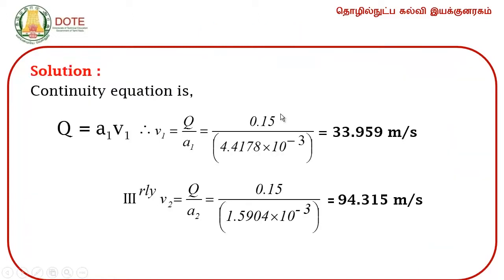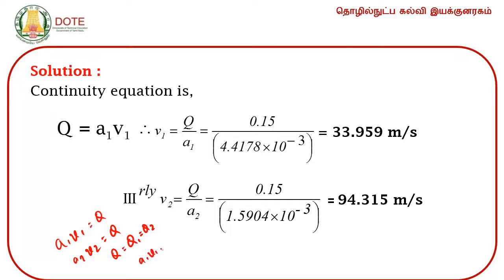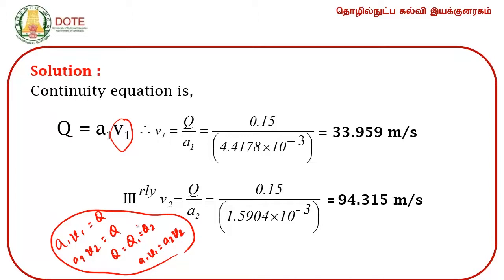We know from the continuity equation that Q = Q1 = Q2. That is, A1V1 = A2V2. According to this, Q = A1 × V1, so V1 = Q ÷ A1.